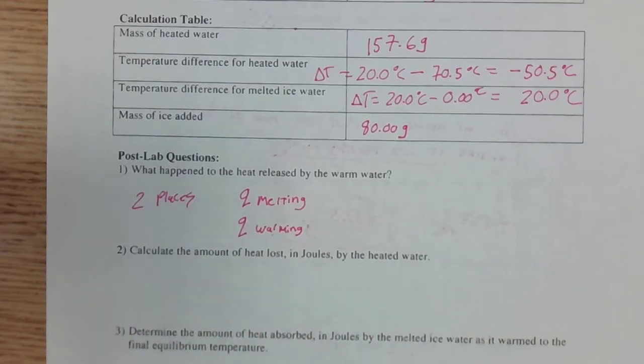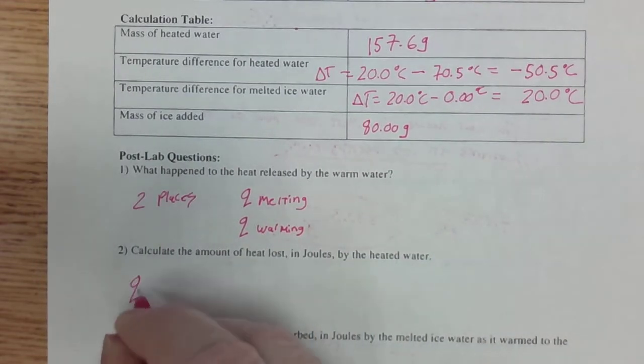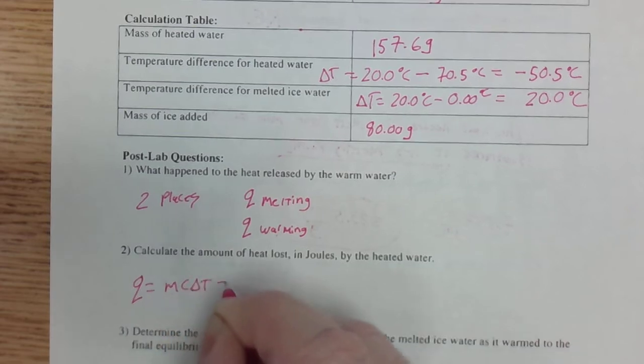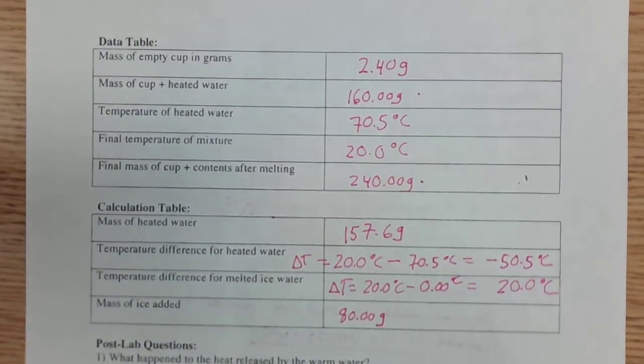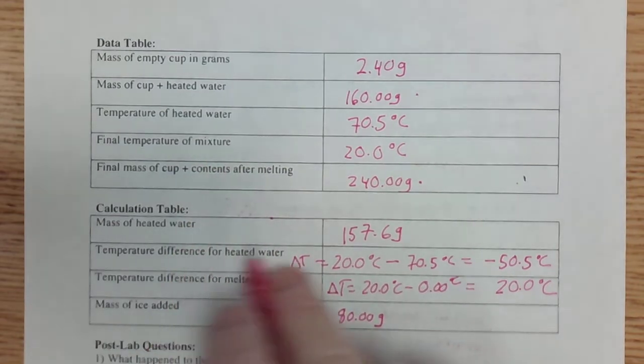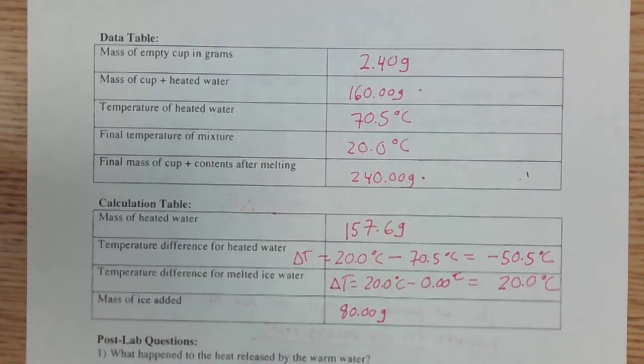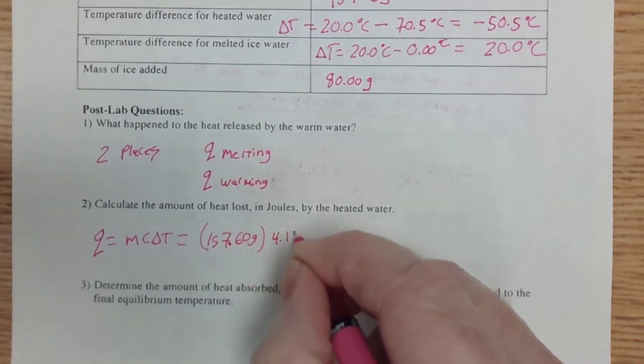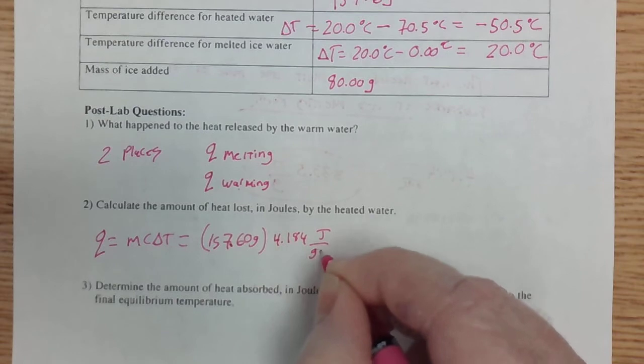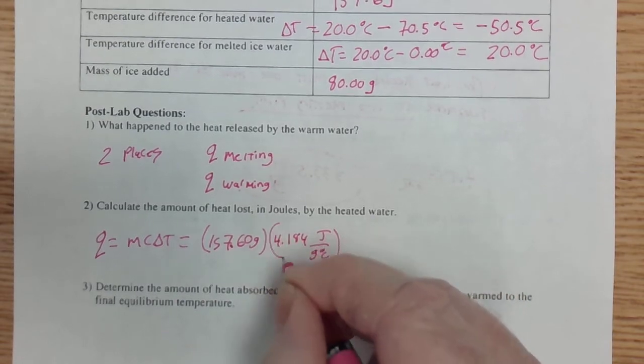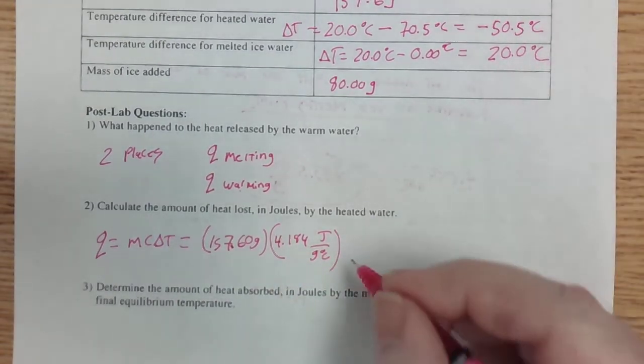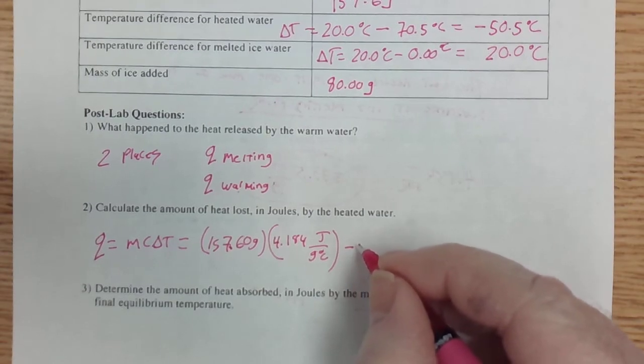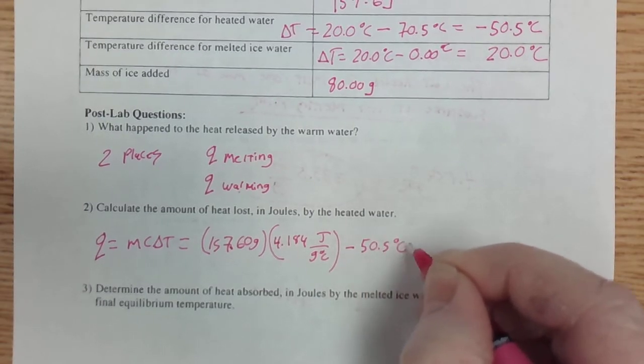What was the amount of heat lost in joules by the heated water? Q equals MC delta T, which equals, now we look up here. The mass of the heated water is 157.60 grams times the heat capacity of the water, 4.184 joules per gram degree Celsius. And the temperature difference for the heated water we calculated is negative 50.5 degrees Celsius.